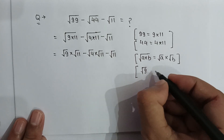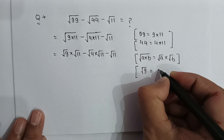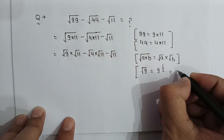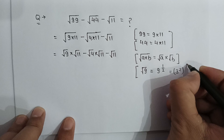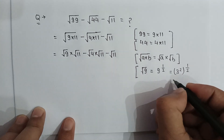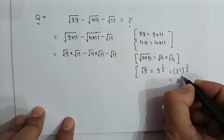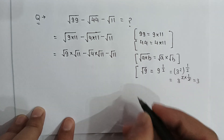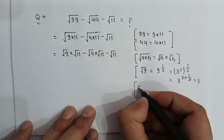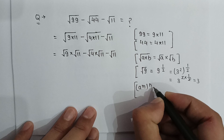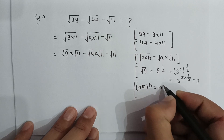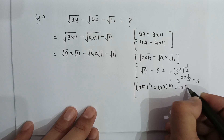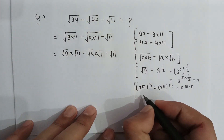Square root of 9 can be written as 9 to the power 1 over 2, and 9 can be written as 3 squared, whole to the power 1 over 2. This equals 3 to the power 2 multiplied by 1 over 2, which gives 3. This uses the rule: a to the power m, whole to the power n, equals a to the power m multiplied by n.